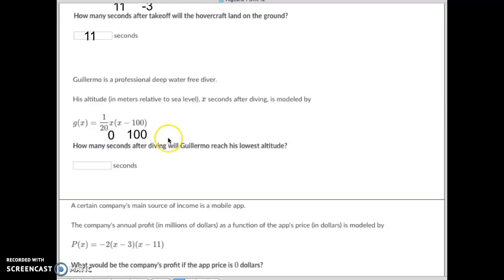So here is my two x-intercepts. Where does the vertex, the x-coordinate of the vertex, take place between the two x-intercepts? Hopefully you're going to say right in the middle. So what's right in the middle of zero and 100? You would be correct if you said 50. So the x-coordinate of the vertex is 50. So 50 seconds after diving it will reach its lowest altitude.